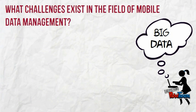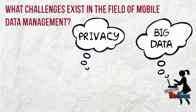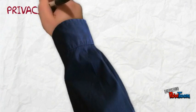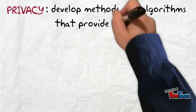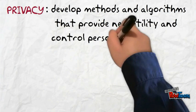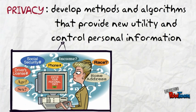The second challenge is privacy. Since mobile devices are carried around by real users, this means that some services might be able to know about your current location. In order to cope with this challenge, techniques and algorithms must be developed which provide new utility and allow you to control your personal information.